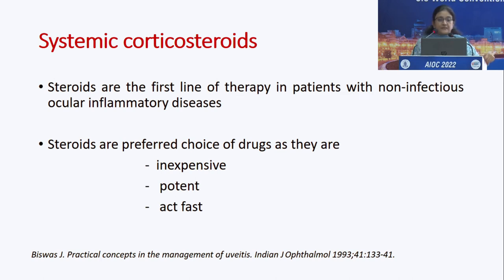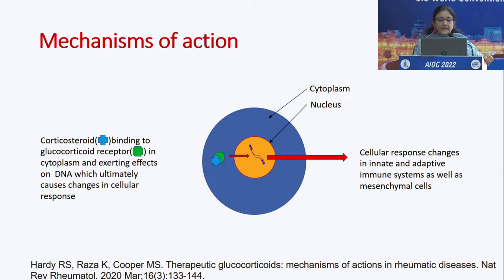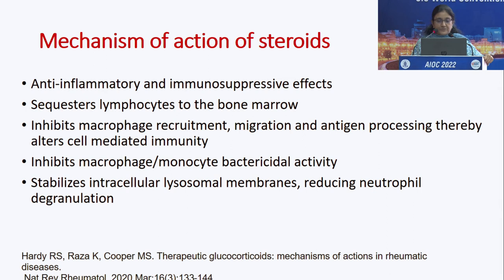The most important systemic medication for uveitis is systemic corticosteroids — the first line of therapy in patients with non-infectious ocular inflammatory diseases. They are inexpensive, potent, and act very fast. Corticosteroids bind to glucocorticoid receptors in the cytoplasm, bringing about a change in cellular response and thereby controlling inflammation. They have anti-inflammatory and immunosuppressive effects, sequestering lymphocytes to the bone marrow, inhibiting cell responses to alter cell-mediated immunity, and stabilizing intracellular lysosomal membranes to reduce neutrophil degranulation.